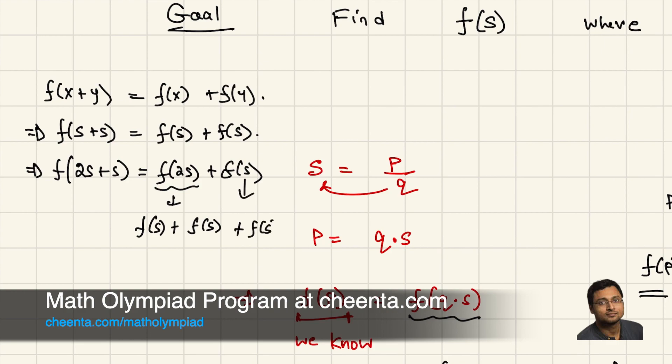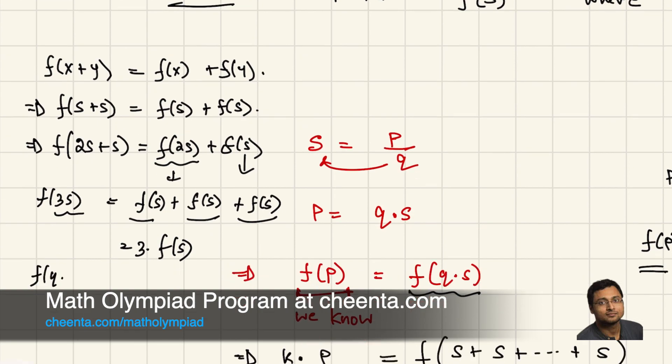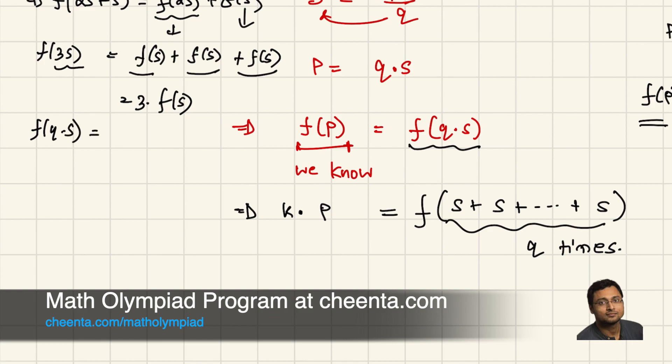So, we bring this down. So we see that f(3S) is equal to f(S) + f(S) + f(S). So 3 times f(S). So we can do this Q times. f(Q times S) is equals to Q times f(S). That's what we are up for.